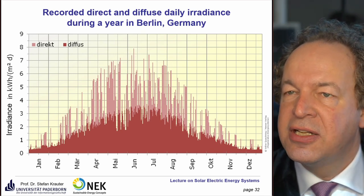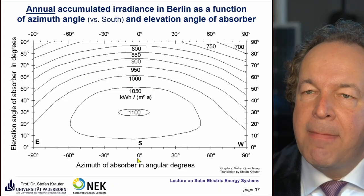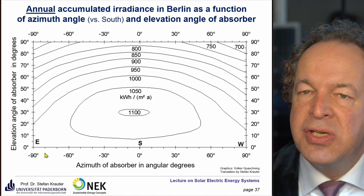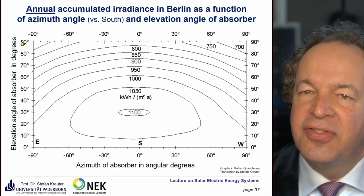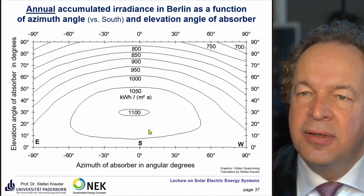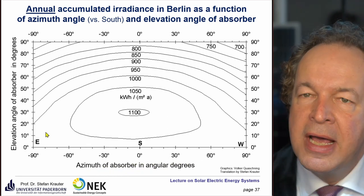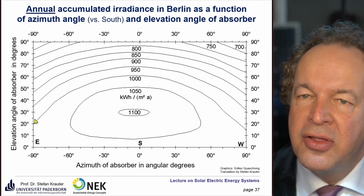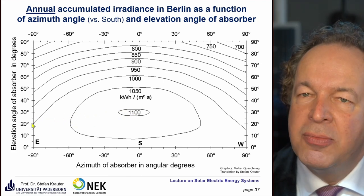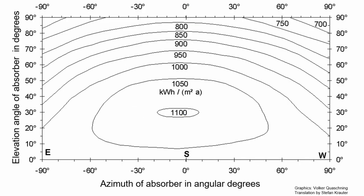This is a map for Berlin. On the y-axis we have the elevation angle of the receiver and on the x-axis the azimuth angle. An elevation angle of about 30 degrees is a good optimum, yielding an accumulated annual irradiance of around 1100 kilowatt-hours per square meter per year.